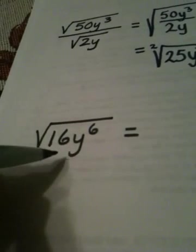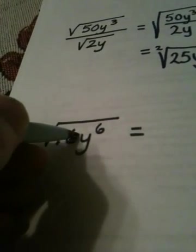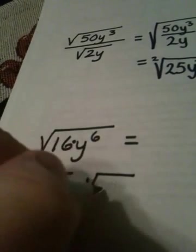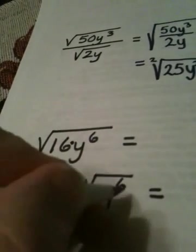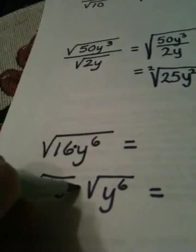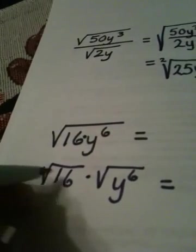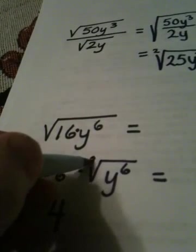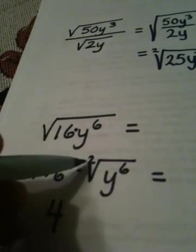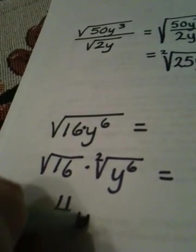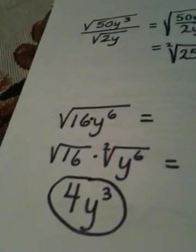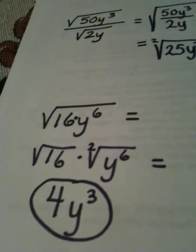The square root of 16y to the sixth. This is basically a product, so I'm allowed to separate it into two radicals being multiplied together. The square root of 16 is obviously 4. Remember the index is 2, 6 divided by 2 is 3, that becomes y to the third. So my total answer is 4y to the third.